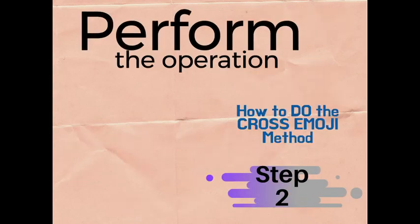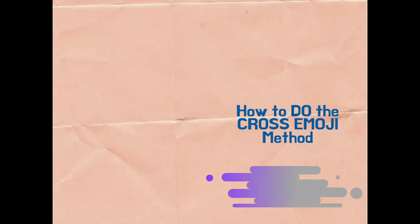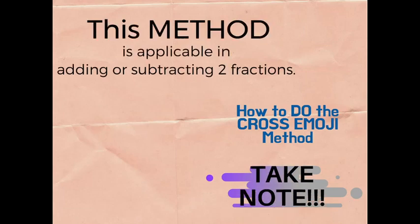This method basically involves two steps: first, simply multiply numbers; second, perform the operation — add or subtract. Unlike the butterfly method where you divide then multiply, here you just multiply then perform the operation. Take note that this method is applicable only when adding or subtracting two fractions — only two fractions, not three or four.